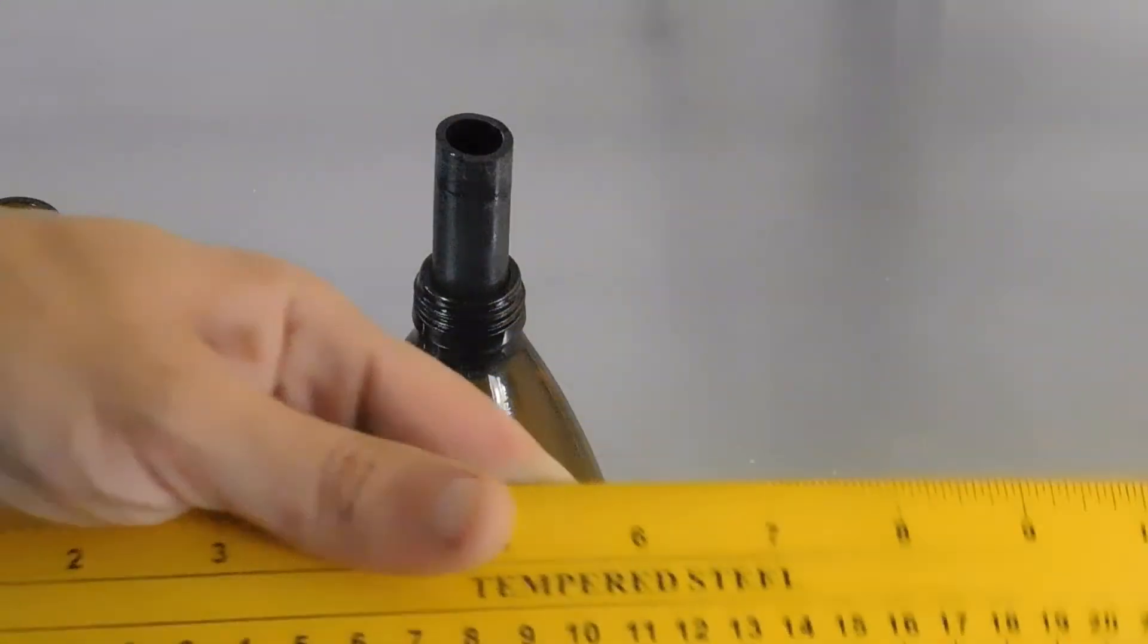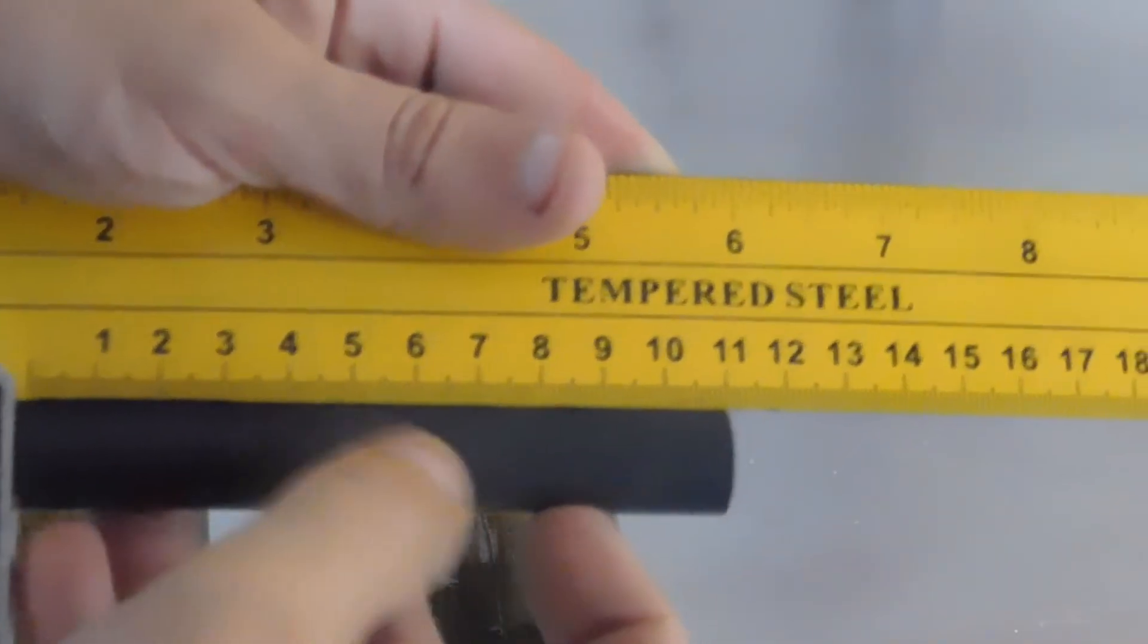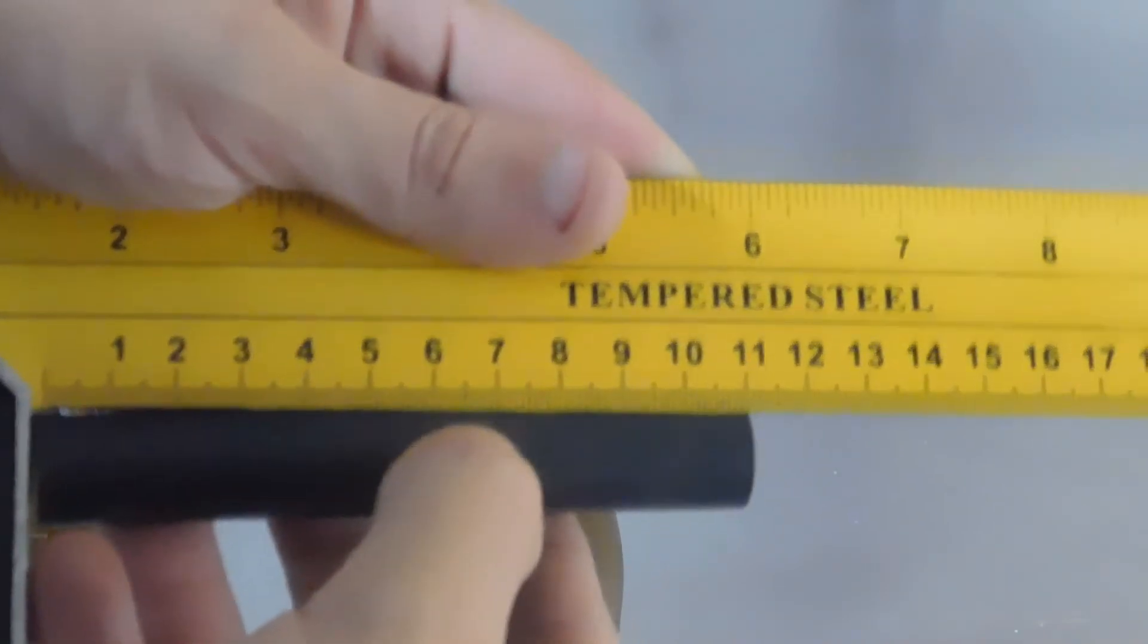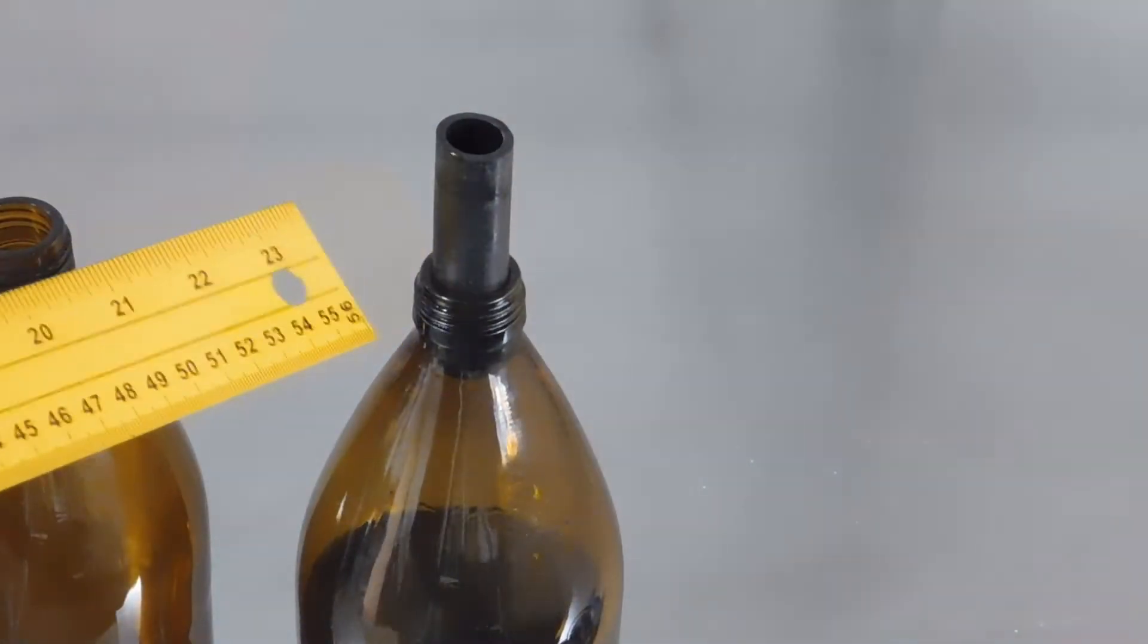Después tomamos más o menos 6.5 centímetros de tubo. 6.5 por acá y cortamos entonces el tubo. Y lo colocamos de esta forma.